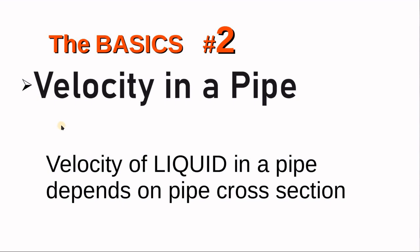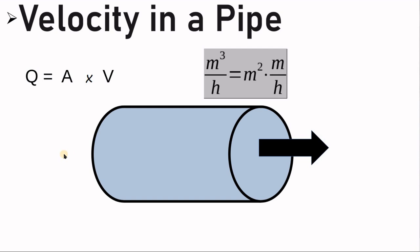Now let's look at the velocity of liquids or fluids in a pipe. The velocity in a pipe depends on the cross section. If you have a specific flow rate in cubic meters per hour going in one end, the same flow rate must exit the other end. Flow rate equals cross-sectional area multiplied by velocity — cubic meters per hour equals square meters times meters per hour. So at any cross section, you can find the velocity if you know the flow rate.